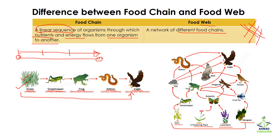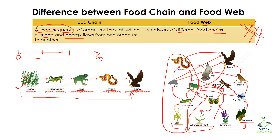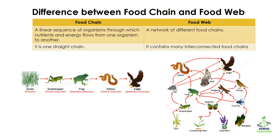All these plants are eaten by grasshoppers, butterflies, and fruit flies, which are further eaten by dragonflies, thrush, frogs, and rats, and then by python, eagle, and wolf. Different food chains — this one, and this one — are all interconnected with each other, and that is why they form a food web.